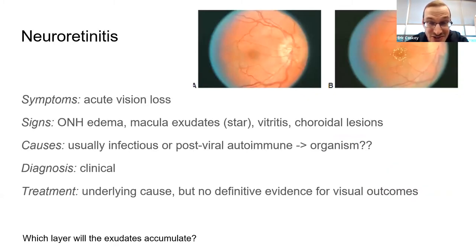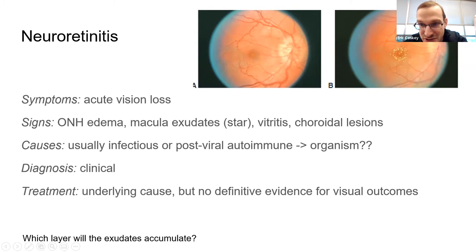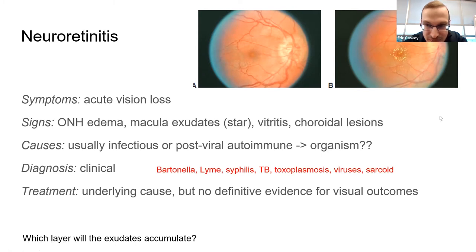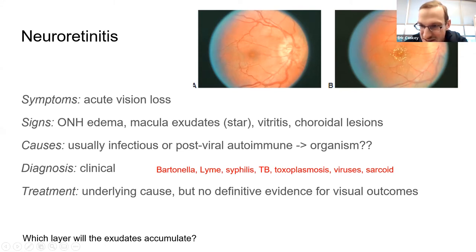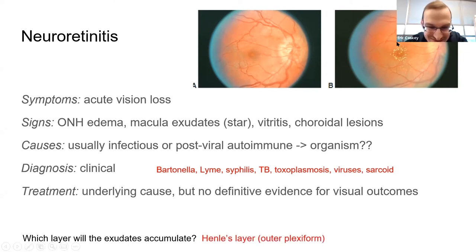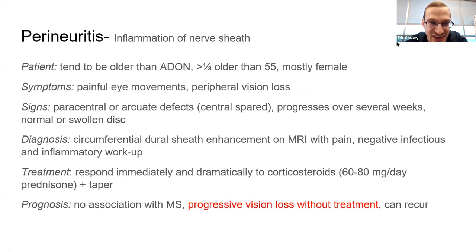Neuroretinitis is a good OKAPS question. You'll typically have acute vision loss and may have a normal macula in the early stages, as this photo shows — the macular star or exudates only develop on one side at first. There are many different organisms involved. The exudates accumulate in Henle's layer — well done.